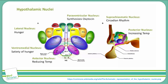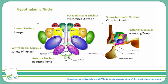Next we have the paraventricular nucleus. The paraventricular nucleus is responsible for synthesizing oxytocin. Oxytocin has numerous functions but it's best known for its role during childbirth and breastfeeding. Oxytocin is synthesized and released during childbirth in response to a baby's head coming in contact with the cervix, causing the uterus to contract and help to birth the baby. In fact, we often administer exogenous oxytocin to patients in order to stimulate or augment labor. Therefore, patients with lesions in the paraventricular nucleus may experience issues during pregnancy. Oxytocin is produced in the hypothalamus and released by the posterior pituitary, as opposed to being synthesized by the posterior pituitary itself.